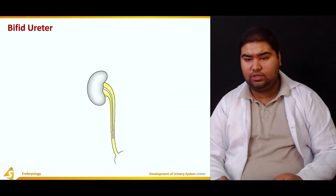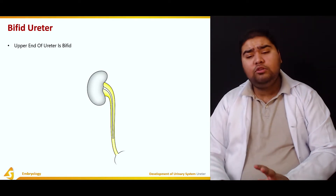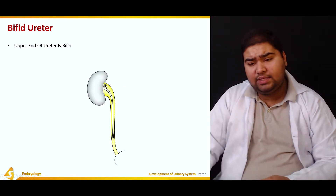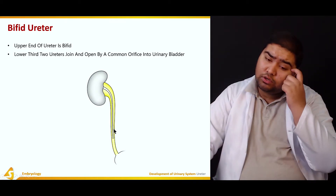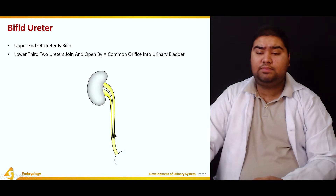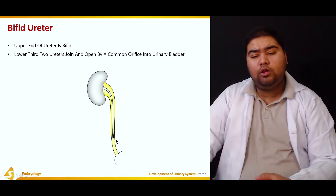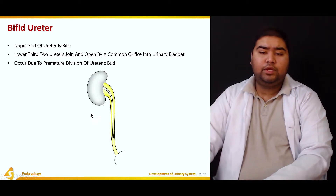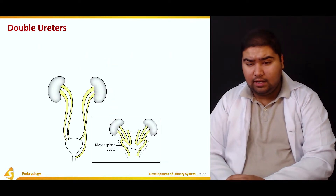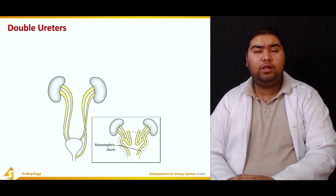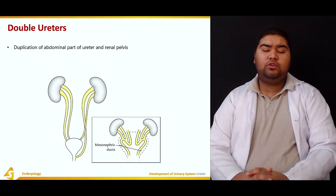A bifid ureter: the upper end of the ureter is bifid. However, in the lower two-thirds, the bifid ureter joins and opens by a common orifice into the urinary bladder. This also occurs due to premature division of the ureteric bud.